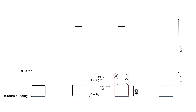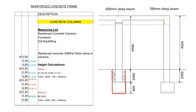With this background in mind, I've prepared a measuring list to guide us through the items we are going to measure under the concrete column section. We will go through these items step by step: we will be measuring the reinforced concrete to the columns, the formwork to the columns, and then we are going to deduct the backfilling material as explained in the previous video. These columns have the same concrete mix, so as per the standard system we'll be measuring all of them under one description.